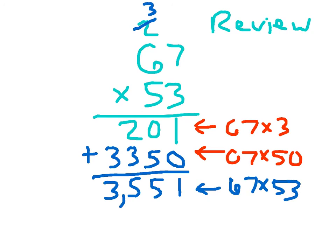That's double-digit multiplication when we have two digits in both of those factors. Remember to line up your numbers carefully when adding, place your 0 when you need to, and remember to add in those regroups.